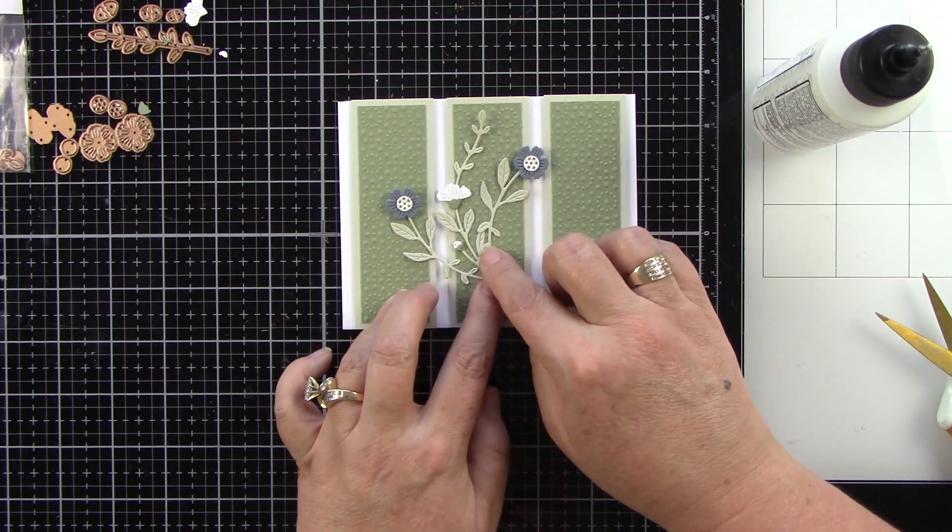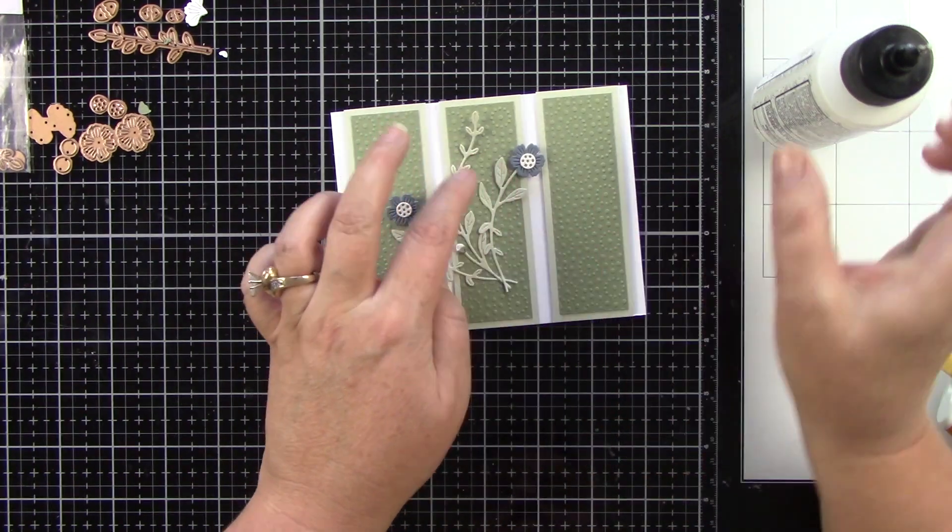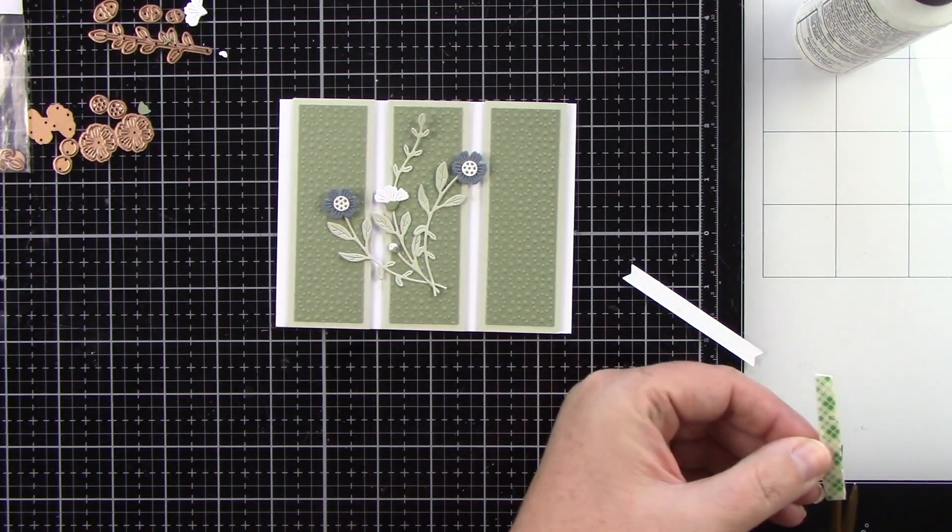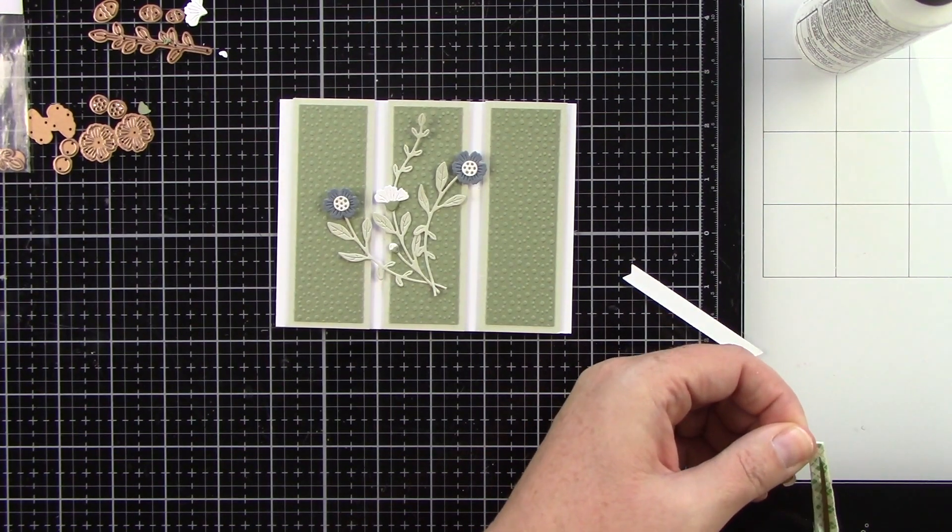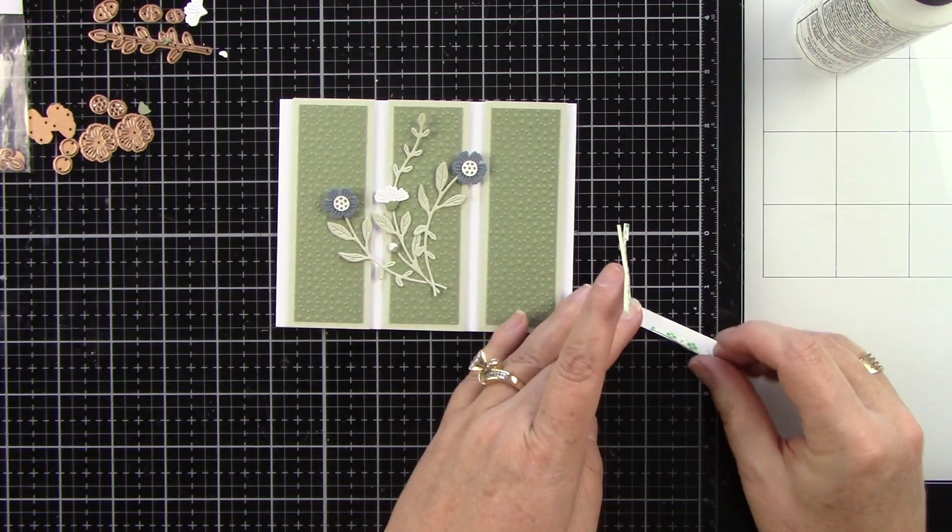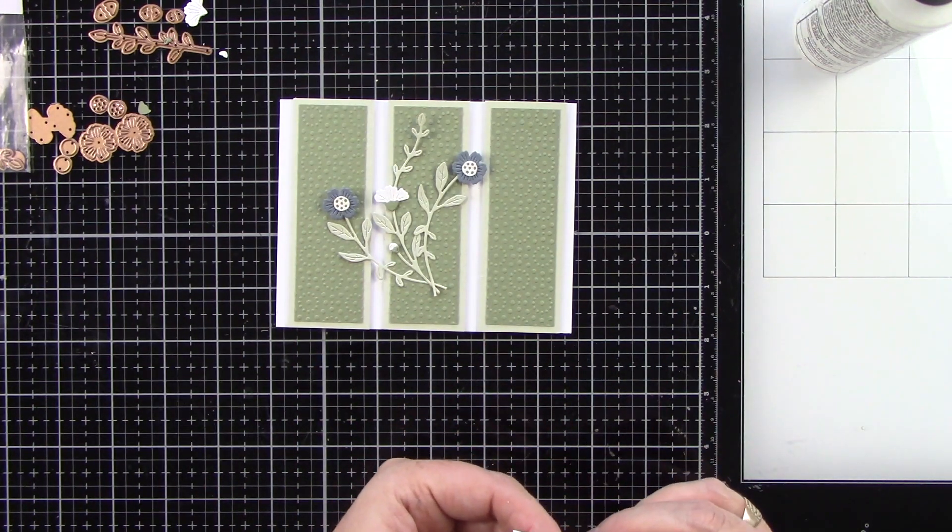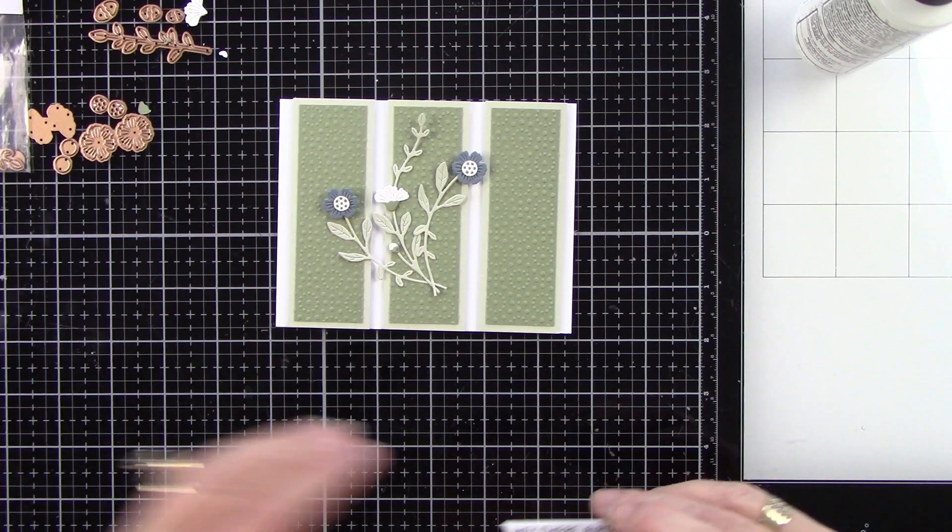I love that it's just going across mainly two of those panels and then when I bring the sentiment in it's going to go across the third panel. And this is a sentiment from Tailored Expressions. This is the Simple Strips birthday and it says hey there birthday girl. It's already stamped in black ink.